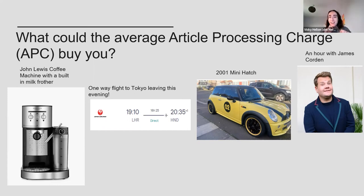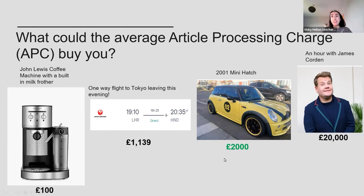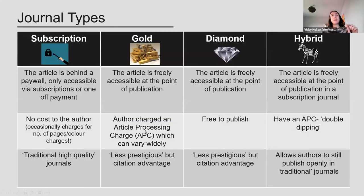The results showed a split: 12% on the coffee machine, 41% on the flight to Tokyo, 29% on the souped-up Mini, and 18% on James Corden. The average APC cost is £2,000 — I'd be interested to know how many of you are quite shocked by how much that is. Just to give you an example of how journals can switch between these types: the journal Nature has always been a subscription journal, but recently they offered a hybrid option. Their fee to publish one paper openly is £8,000, which you can imagine stirred some discussion when it was announced.